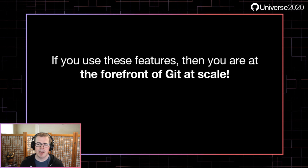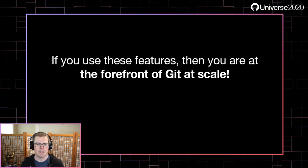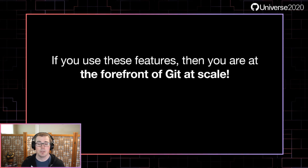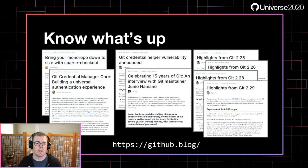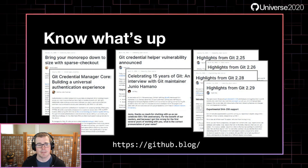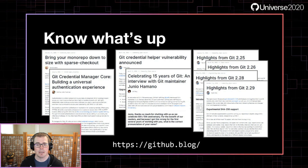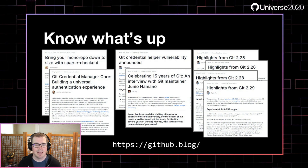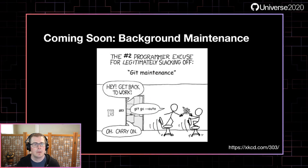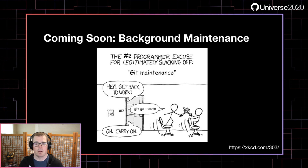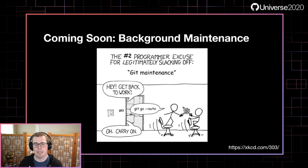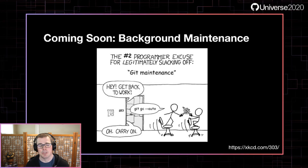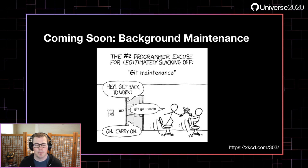Hopefully you've learned a trick or two about Git today and recognize how problems you're already solving to speed up your builds have parallels to speeding up your Git operations. If you use all of these features, you are truly at the forefront of Git at scale and are leading the way. As you lead the way, you'll be well poised to take advantage of new Git features as they come out. Keep up to date by following the GitHub blog. As a teaser of an upcoming Git feature: background maintenance. We are working to deliver the ability to easily schedule maintenance on your Git repositories in the background, so you never get blocked on a `git gc --auto` again, keeping your repositories running smoothly without blocking user-facing commands.